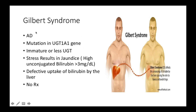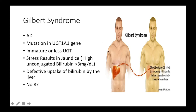Still on high levels of unconjugated bilirubin, we talk about Gilbert syndrome. Gilbert syndrome is autosomal dominant, and here there's a mutation in the UGT1A1 gene. When that happens, you have less or immature UGT levels, which leads to high levels of unconjugated bilirubin. Most of the time, patients with Gilbert syndrome are asymptomatic, and they usually present after a stress event — for example, after a stressful event like hiking, symptoms may begin.